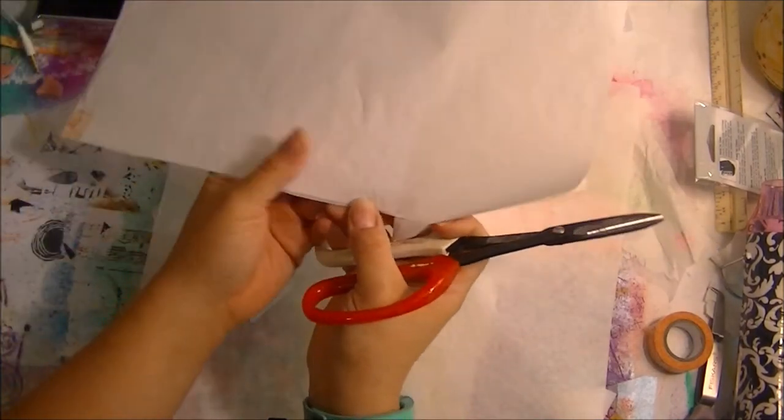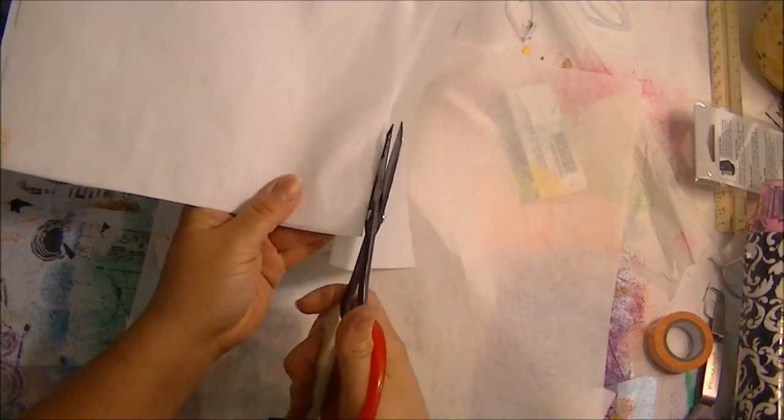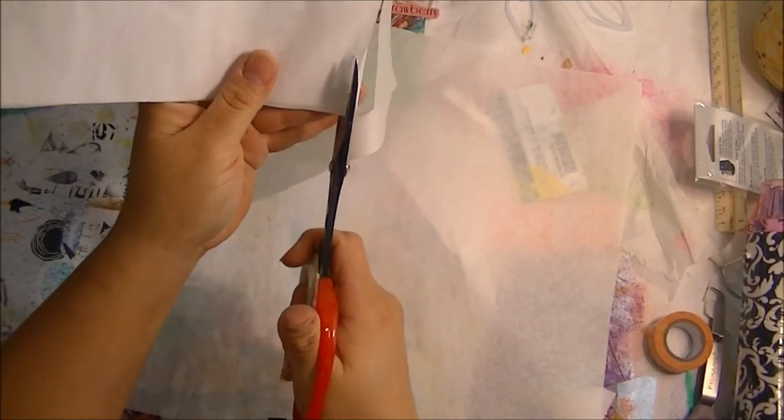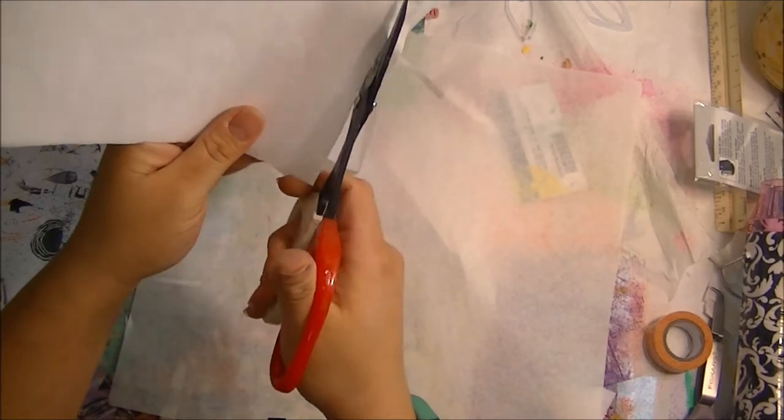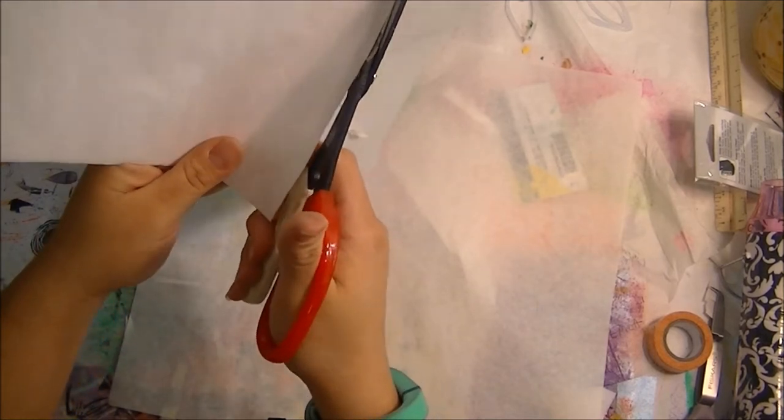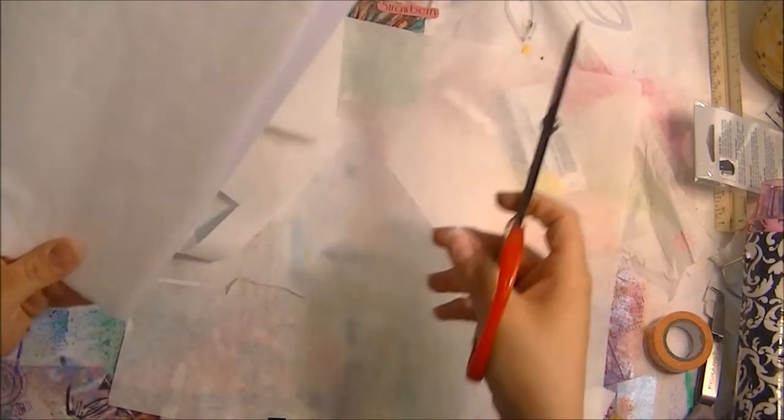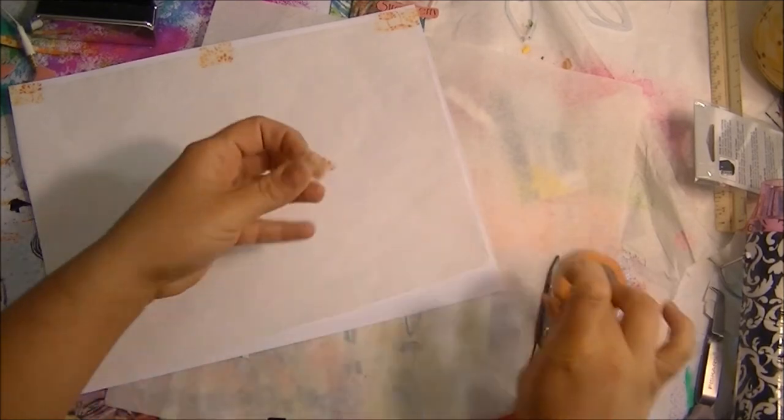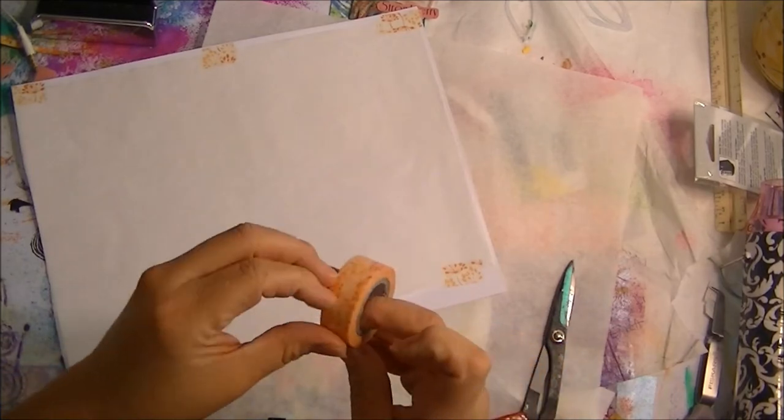Because it was 12 by 12, we need an 8 and a half by 11 to go on here. If you have a little snippet it doesn't have to be the entire sheet. As long as you can line it up, it doesn't really matter if it's the whole thing or not. So just going to trim it down.